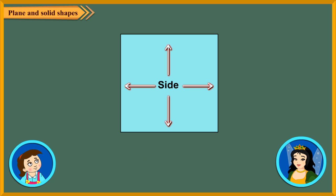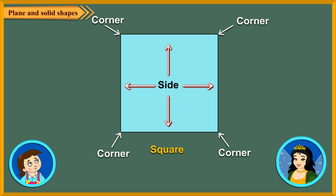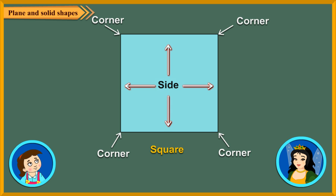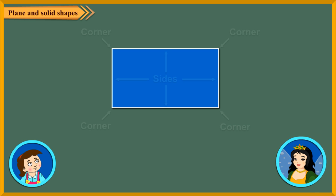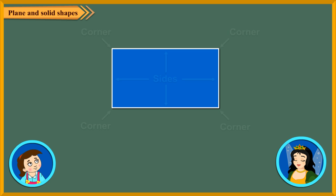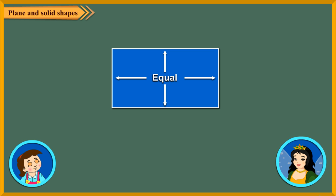This shape here is made up of four equal straight lines. It is a square. It has four corners. Now look at this shape. It is also made up of four straight lines, so it also has four sides and four corners. But it is not a square because all its sides are not equal. Its opposite sides are equal. It is a rectangle.